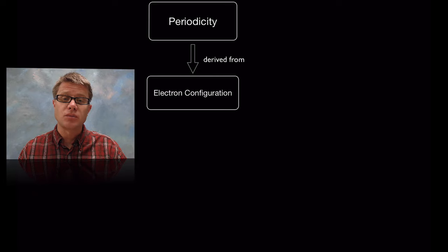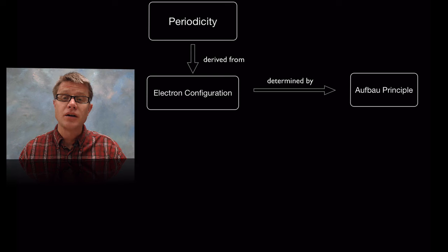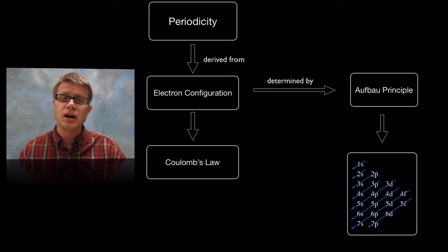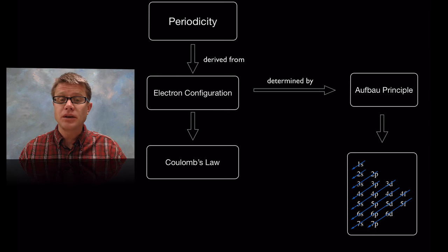And so periodicity is going to be derived from the electron configuration. In other words, where the electrons are, and we can determine that by using the Aufbau principle. But what's the meaning behind this? It all comes from Coulomb's law which helps to explain electron configuration and also helps to explain these trends.